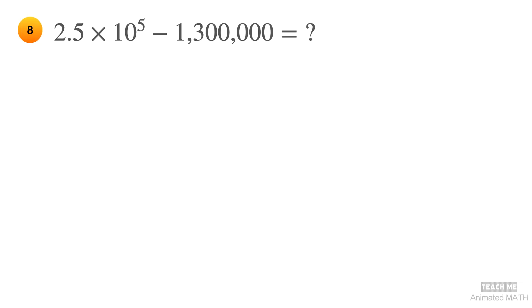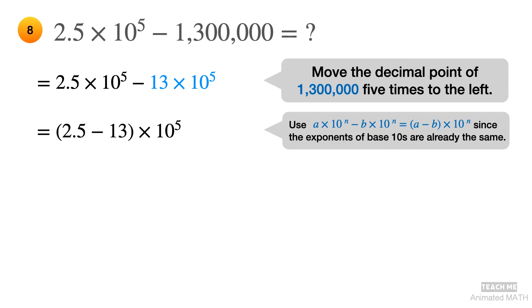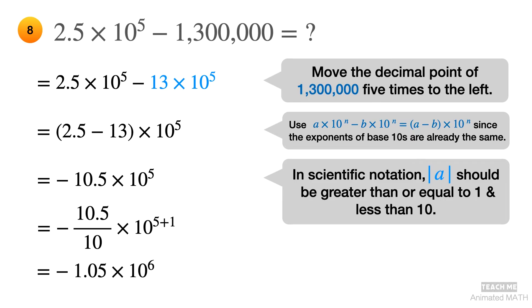Try this similar problem. Convert 1,300,000 into a number with a multiplier of 10 to the 5th power. Moving the decimal point 5 units to the left gives you 13 times 10 to the 5th power. 2.5 minus 13 is equal to negative 10.5. Since the absolute value of negative 10.5 is greater than 10, divide it by 10 and add 1 to the exponent 5. The final answer is negative 1.05 times 10 to the 6th power.